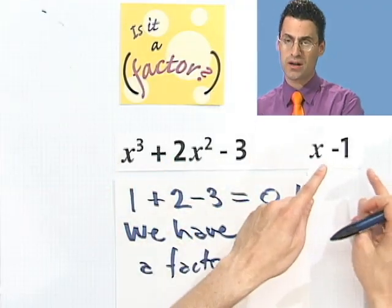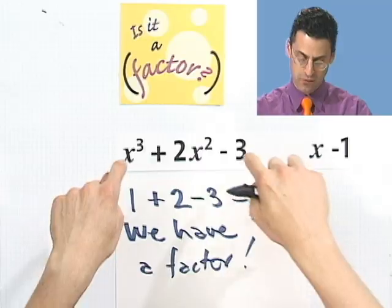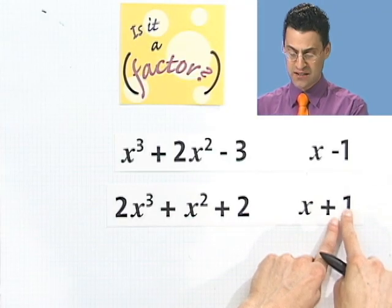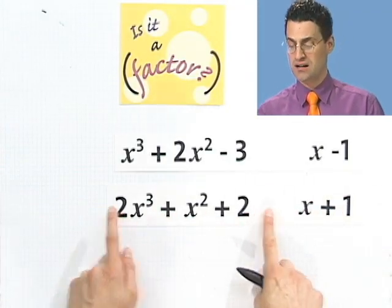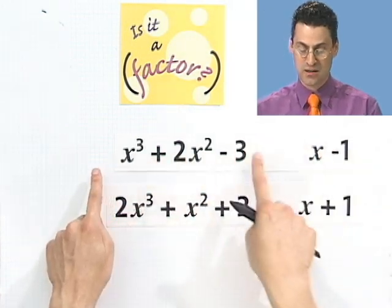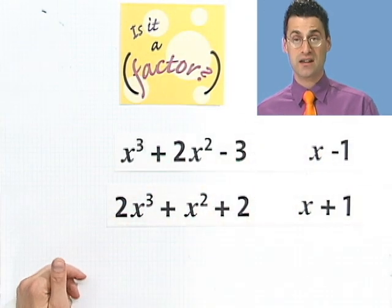So that means that x minus 1 is a factor of this polynomial. So x minus 1 times something else will equal that. So you can see whether we have a factor or not just by, not long dividing now, just by taking the opposite sign, in this case negative 1, plugging it in here, see if it's 0 or not. In this case, taking 1, plugging it in here, seeing if it's 0 or not. And you can actually find whether this thing is a factor or not by using the factor theorem.